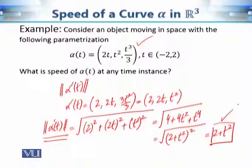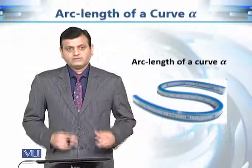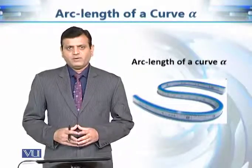For example, at t = 0 the speed is 2, and at t = 1 the speed is 3. As t changes, the speed of the object changes accordingly, and in this particular case it equals 2 + t². Now the next important property is the arc length — the distance traveled from one parameter value to another.